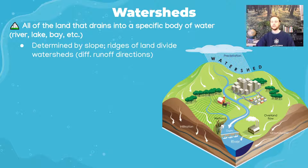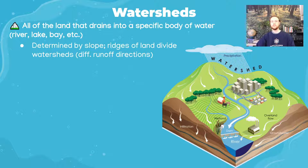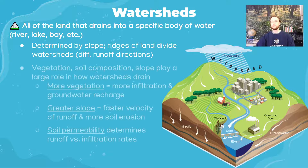If water were to fall just on the right side of this ridge, it's going to trickle down and due to gravity run off into this river. If it falls to the left of this dotted line, it's going to follow the slope and go into a different watershed. Watershed boundaries are basically determined by slope — you can think of it as: if a drop of water lands on this piece of land, which body of water will it run off into?